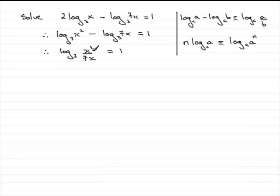Let's just clean this up, first of all, because x squared divided by 7x, you can cancel top and bottom by x. And that will reduce down to the log of x over 7, in base 3. And that equals 1.